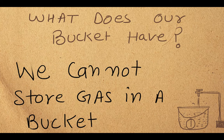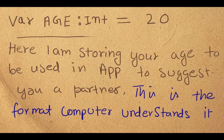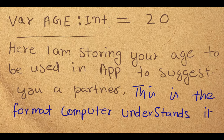You cannot store gas in a bucket — you need a different kind of container, a different kind of variable. Now look at a real example. We have: var age: Int = 20. The name of the variable is 'age.' Since age is measured in numbers — 1, 2, 20, 50 — the type of that data is Int. Integer means whole number: 1, 2, 3, 50, even minus one, zero, five thousand.